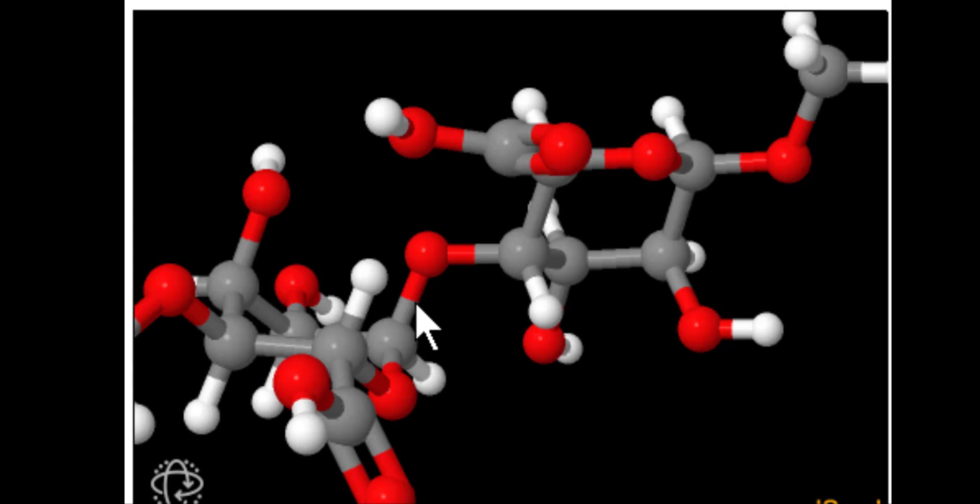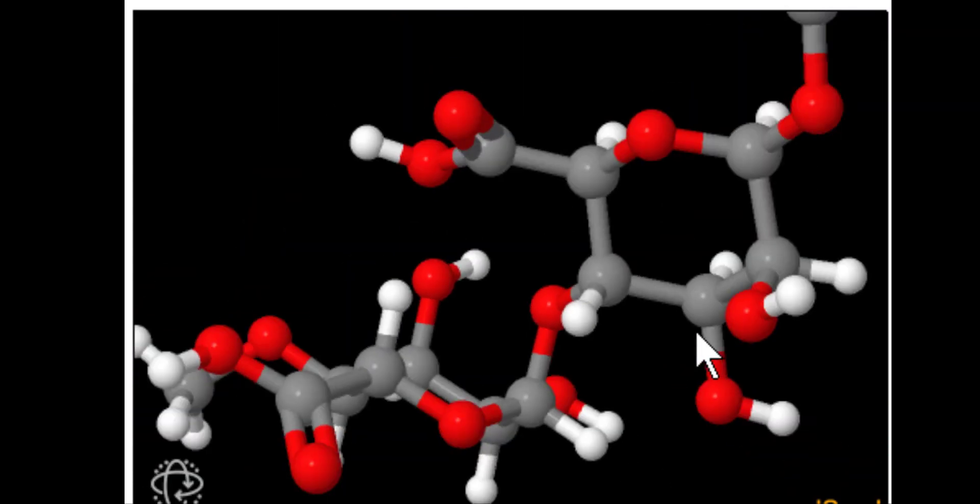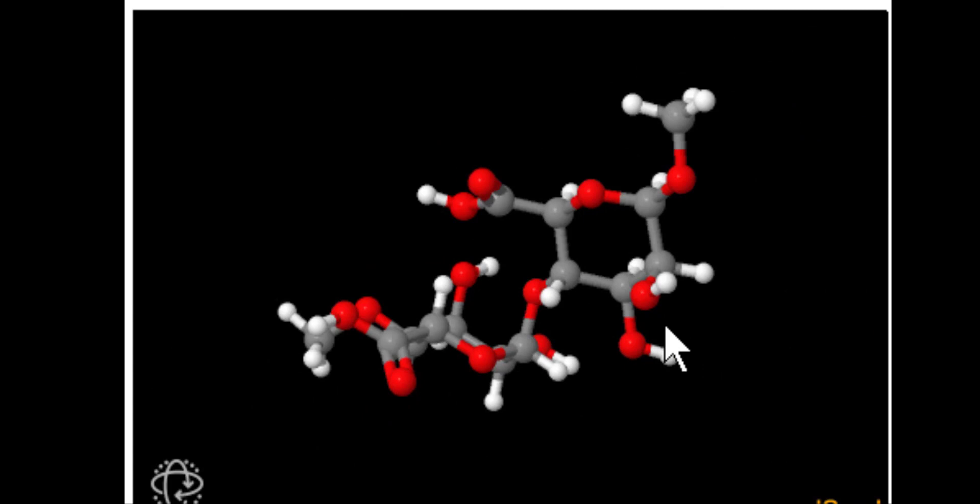This is the repeating unit joined by this little oxygen right here. See that guy joining the two units? Yes, that's what is known as a glycosidic bond, and it repeats itself over and over and over until the polymer effectively becomes unstable.